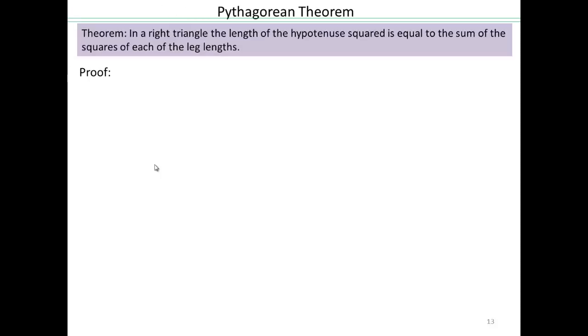So before we formally write down how to find distance between given any two points in the coordinate plane, let's just quick review, in case some of you do not know the Pythagorean theorem. The Pythagorean theorem says that in a right triangle, the length of the hypotenuse squared is the sum of the squares of each of the leg lengths.